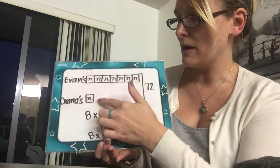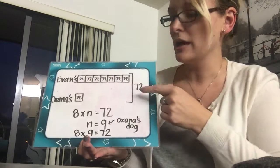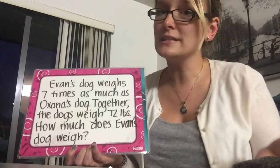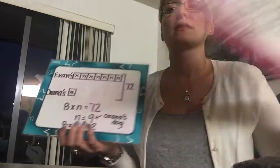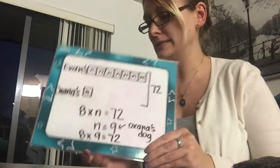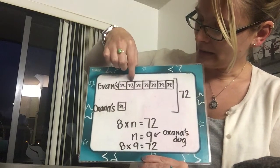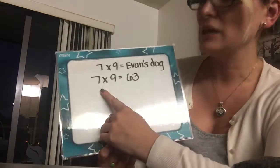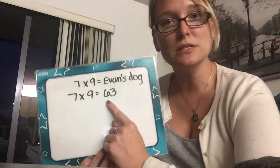Now that I know Oksana's dog is nine pounds, I still need to figure out how big Evan's dog is. So we've got nine here, and then nine across all seven boxes to make 72. Because remember, our bigger question is how much does Evan's dog weigh. So the next step is to figure out Evan's dog — I take nine seven times, so I do the multiplication problem: seven times nine. And seven times nine makes 63. So Evan's dog weighs 63 pounds.